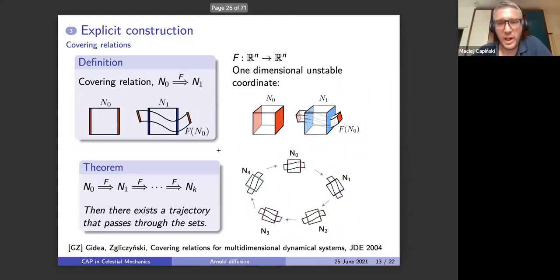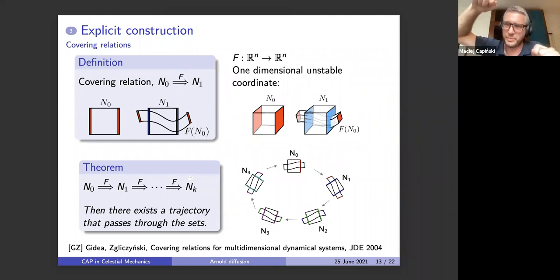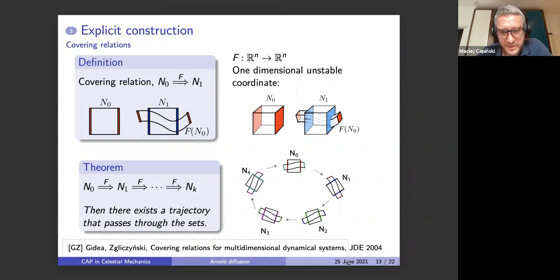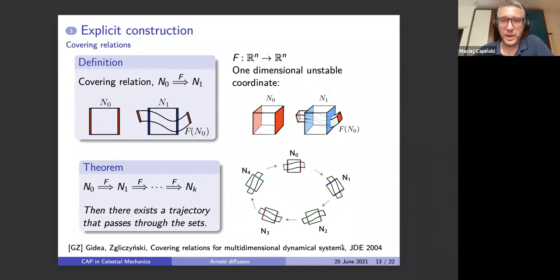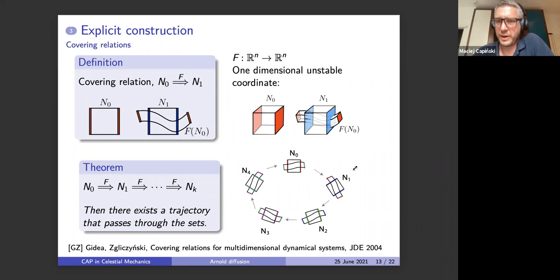This can be formally defined. Why are covering relations useful? This is similar to the Bolzano theorem: one part of the string is to the left, the other to the right, so there must be a part that remains in the middle. This geometric/topological theorem — from a paper by Marian Zgliczynski — says that if you have a sequence of covering relations, there exists a trajectory passing through these sets. In particular, if you loop it back to the first set, there will be a periodic orbit traveling through. Correct alignment is my higher-dimensional version of the Bolzano theorem.